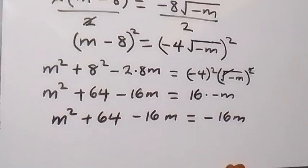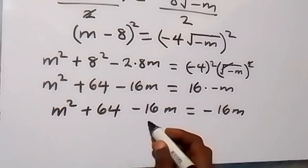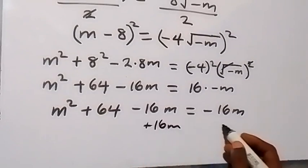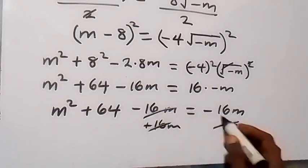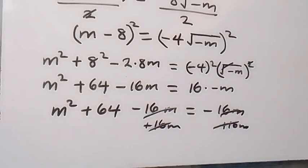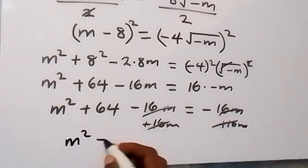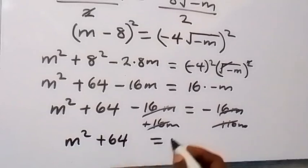From here we add 16m to both sides. The -16m and +16m cancel, leaving m² + 64 = 0.